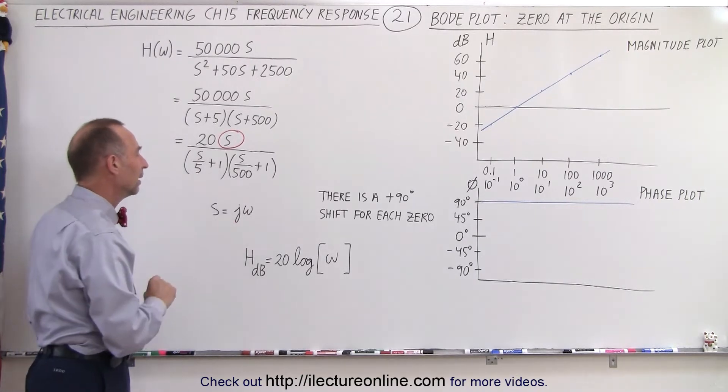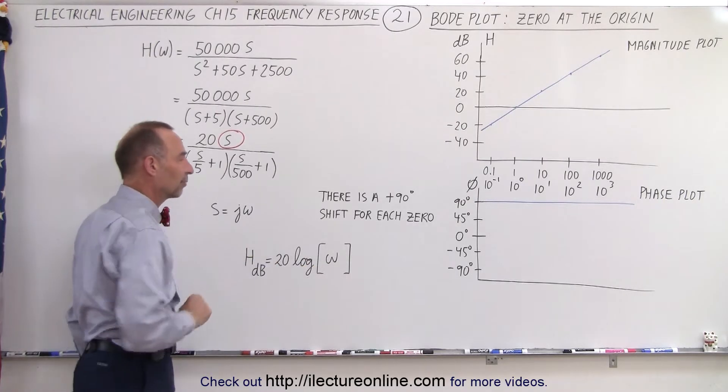Remember that s equals j omega and so the magnitude comes from omega and the phase angle comes from the j.